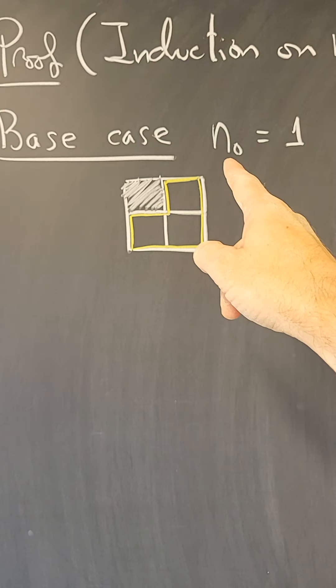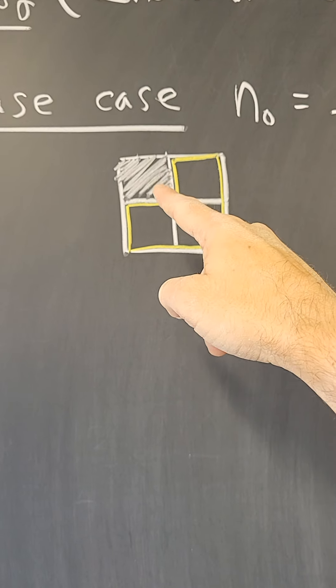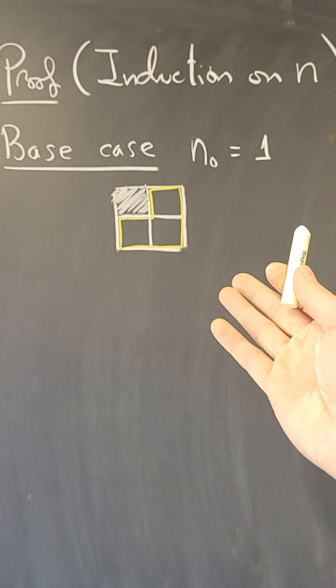So the base case is going to be n equals one. So here's a two by two chessboard, one corner removed, and it's tiled with a piece of that shape. So the base case holds.